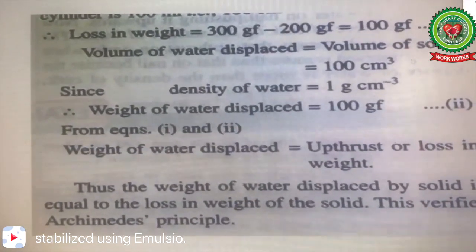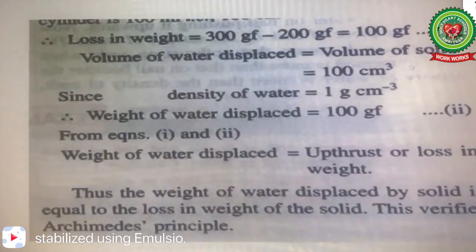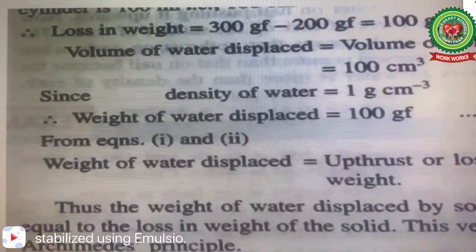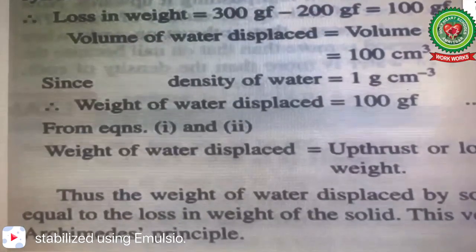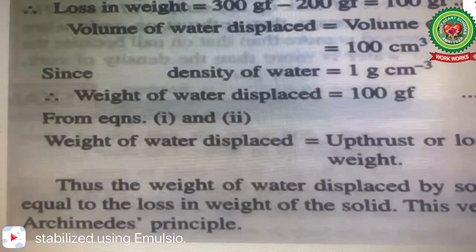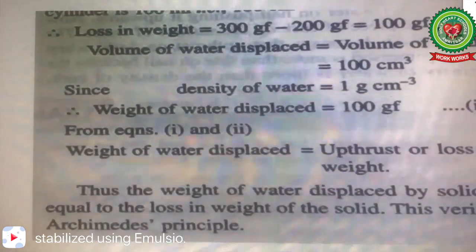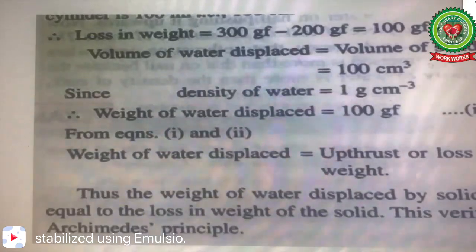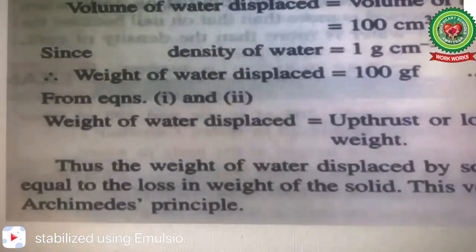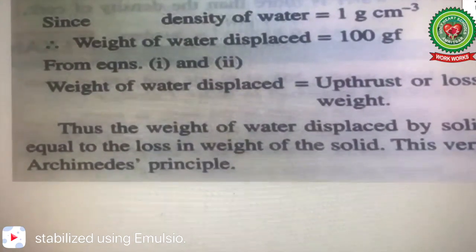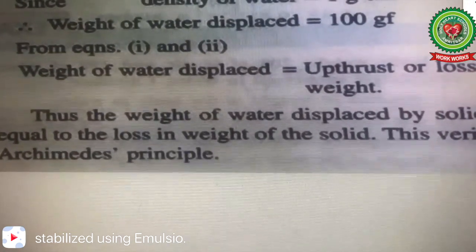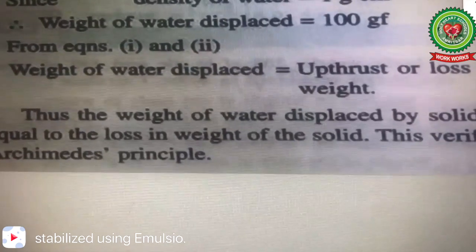Loss in weight = 300 gf − 200 gf = 100 gf. Volume of water displaced = volume of solid = 100 cm³. The density of water is 1 g/cm³, so the weight of water displaced = 100 gf. From these two equations: loss in weight = 100 gf (equation 1) and weight of water displaced = 100 gf (equation 2). Therefore, weight of water displaced equals the upthrust, which equals the loss in weight. Thus the weight of water displaced by the solid equals the loss in weight of the solid, and this verifies Archimedes principle.